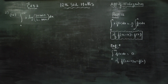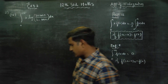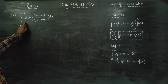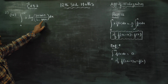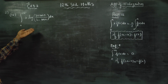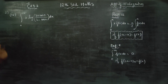Dear 12th standard students, in exercise number 9.3, sum number 2, 4th subdivision: integrate from 0 to 2π, x·log((3+cosx)/(3-cosx)) dx. Using the properties of integration, you have to integrate this using properties of integration.